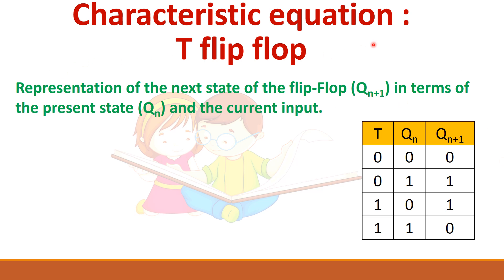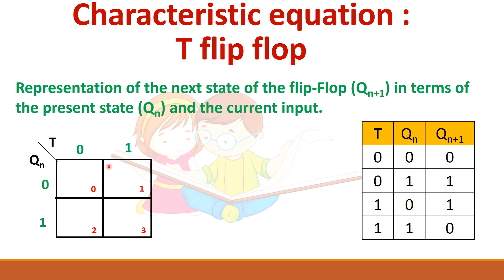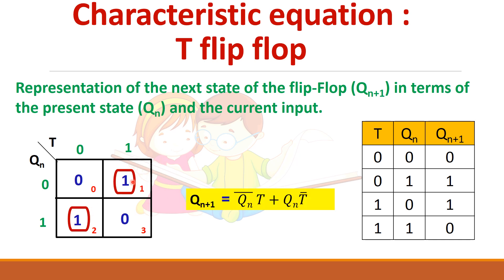Next, we will see the characteristic equation, which can be derived from the truth table using Kmap. Here Qn and T are taken as the variables. T can be zero or one and similarly Qn can be zero or one. Filling in the Kmap: when T is zero and Qn is zero, output is zero; when Qn is one, output is one. When T is equal to one and Qn is zero, you get one; and when Qn is one, you get zero. Since the two ones cannot be combined together, separately you can write the equation: Qn plus one equal to Qn bar into T plus Qn into T bar. This is the characteristic equation.